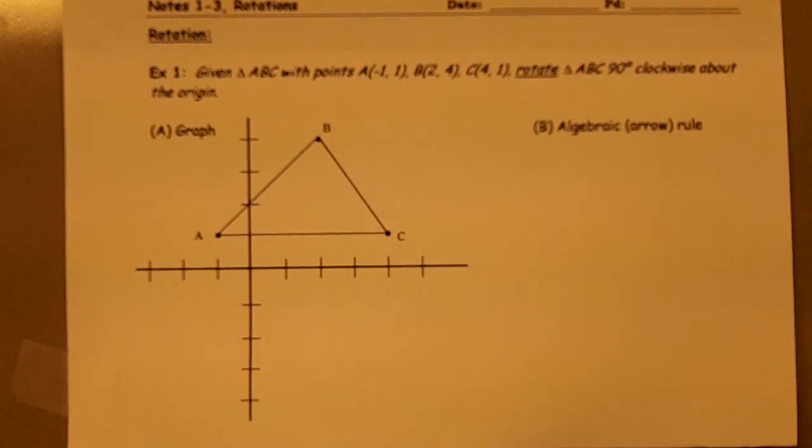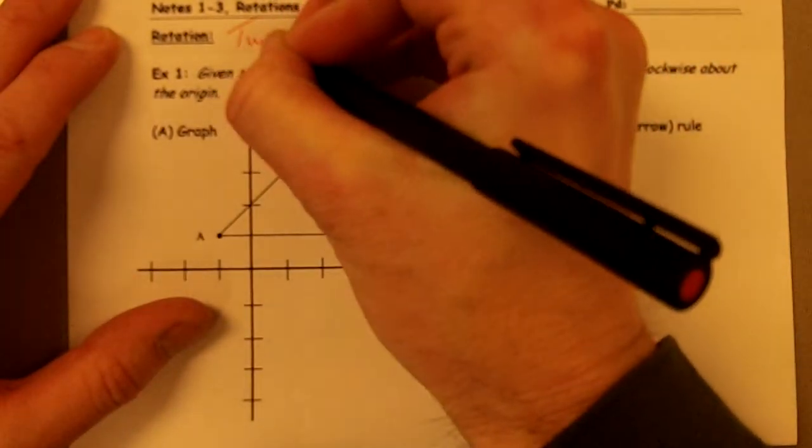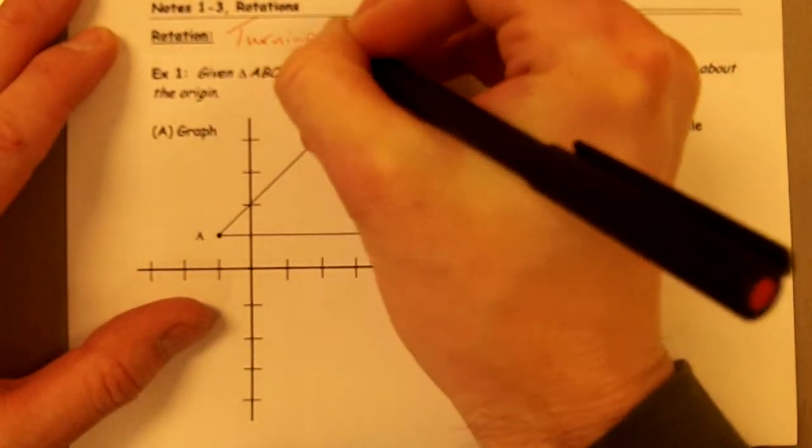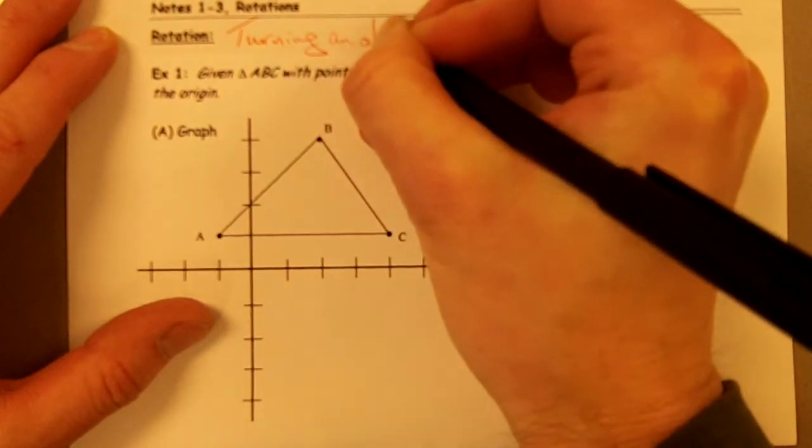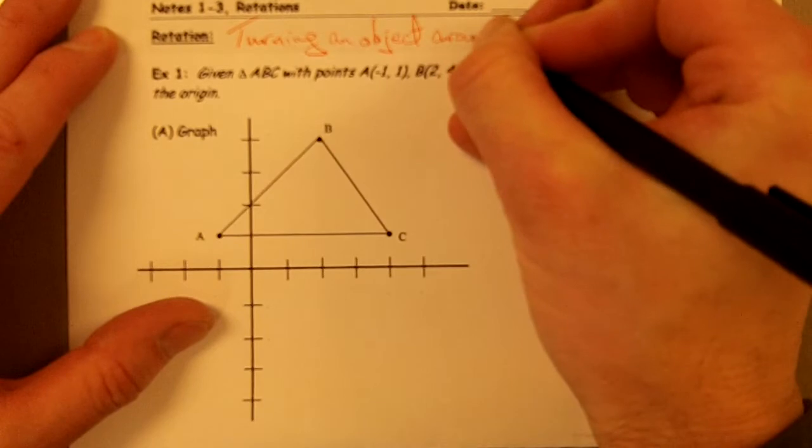Okay, in this video we're going to talk about the geometric transformation called a rotation. Rotation just means turning an object around a fixed point.